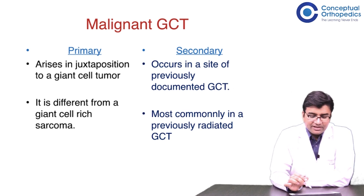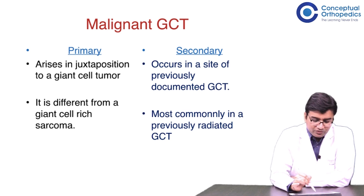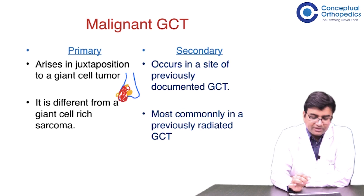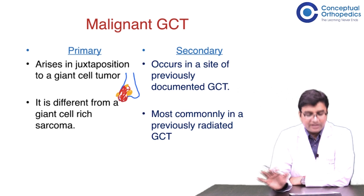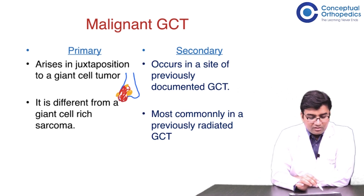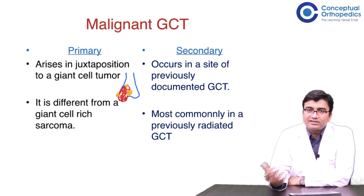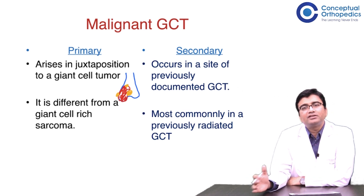Primary malignant GCT arises in juxtaposition to the giant cell tumor — meaning the tumor has both a GCT component and a sarcoma component in some part. This is distinct from a giant cell rich sarcoma, such as an osteosarcoma with multiple giant cells, which is a separate entity where the histology is actually a giant cell rich sarcoma like osteosarcoma.